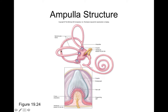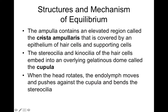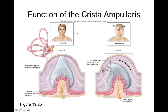Zooming in on the cochlear duct, we find something very similar to the vestibular apparatus: a gelatinous membrane associated with hair cells that have little stereocilia embedded in it. What's different, though, is that when your head is tilted, it doesn't activate these particular hair cells or stereocilia because the cochlea is not involved with the vestibular system — it's involved with your auditory system for hearing.